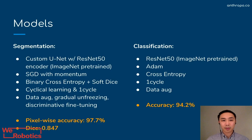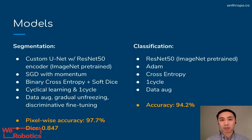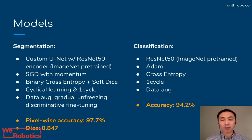To develop our models, we created a custom U-Net for segmentation using a pre-trained ResNet-50 encoder, and also used the ImageNet pre-trained ResNet-50 architecture for classification.